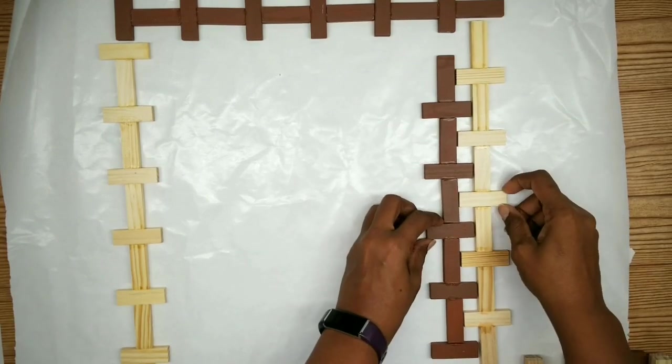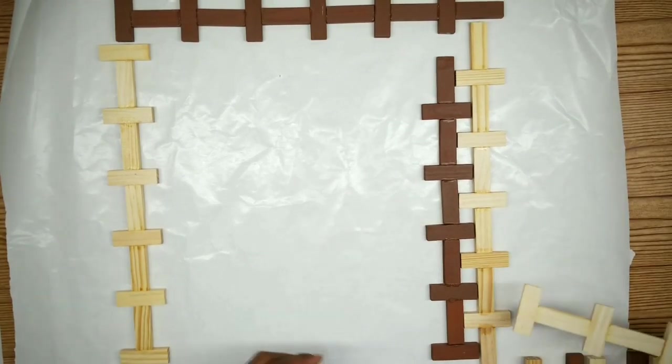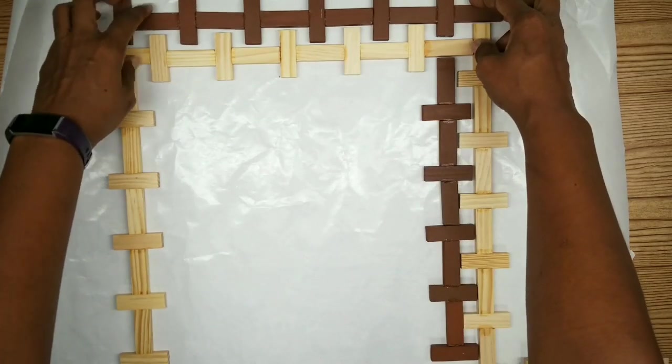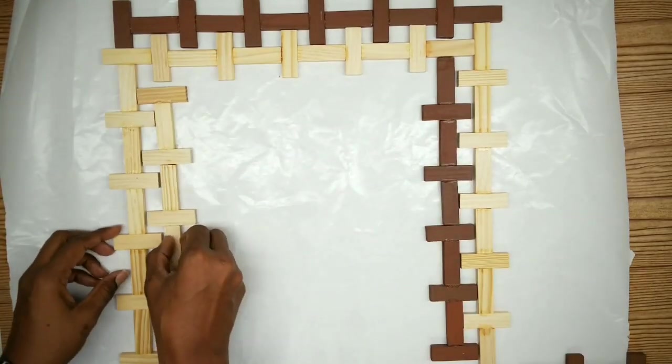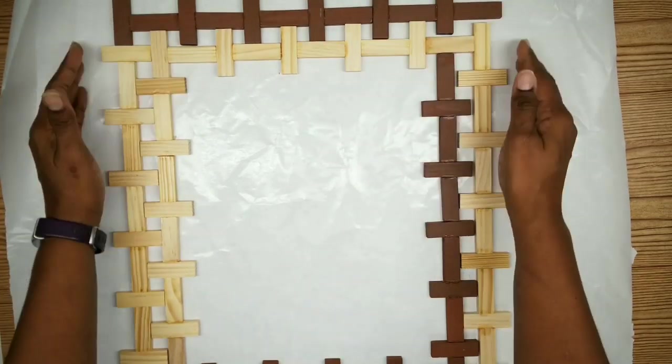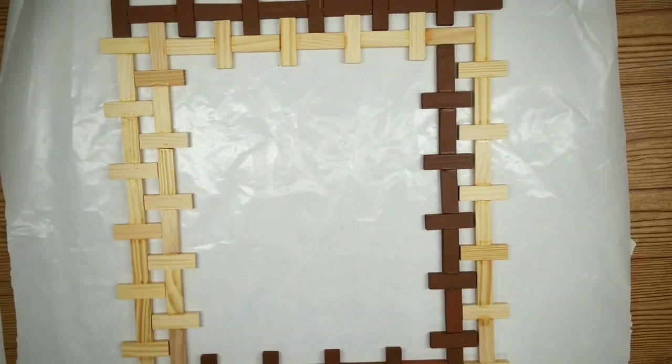Next, we can start adding the shorter sections to the inner part of the frame. After the pieces are adjusted to fit, we can adhere them with E6000 and hot glue where the pieces connect. We want to make sure we allow them to dry completely.